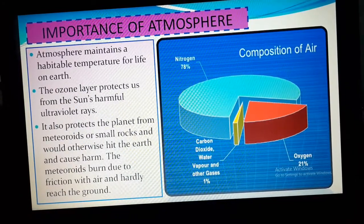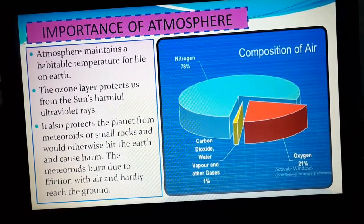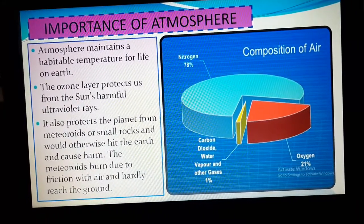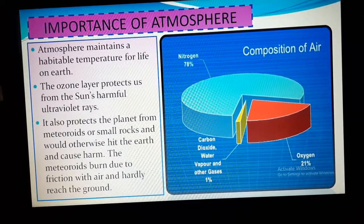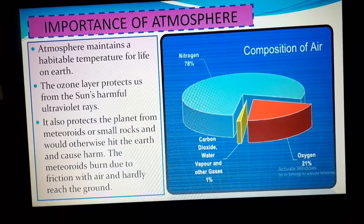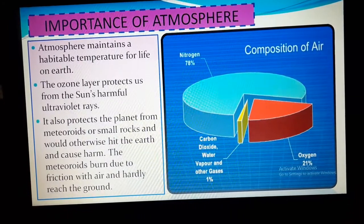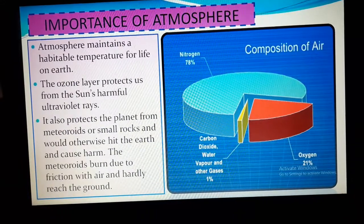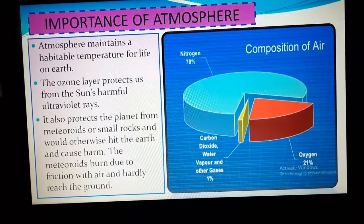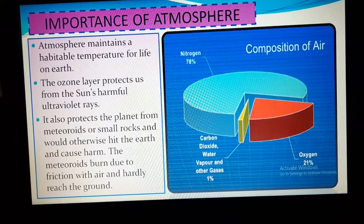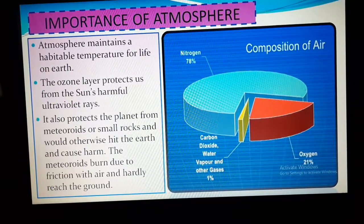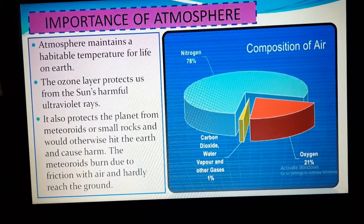Atmosphere maintains a habitable temperature so that we can consider earth as our habitat, that is, as our living place. The second point is that the ozone layer protects us from the sun's harmful UV rays. The third one is very interesting: atmosphere protects our planet from meteoroids.